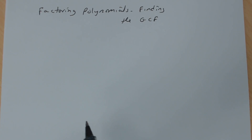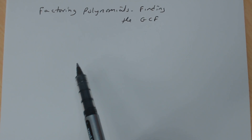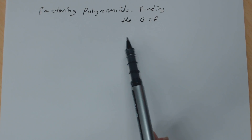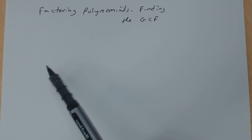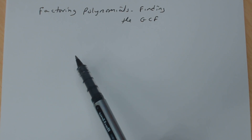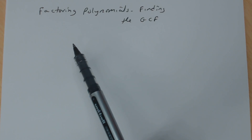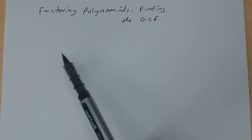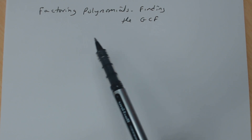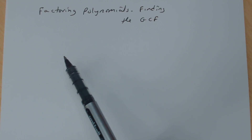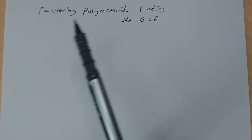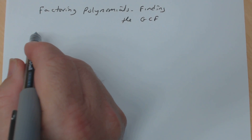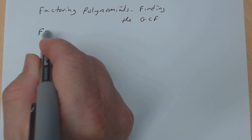In this lesson we're going to factor polynomials by first finding the GCF. In the previous lesson we learned how to find the GCF of several terms, and we're going to use that idea here.